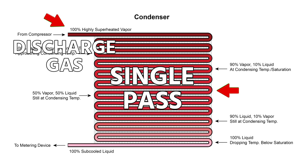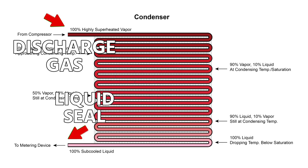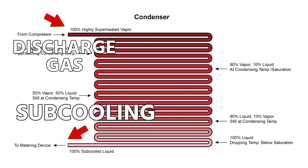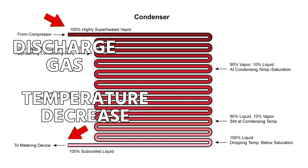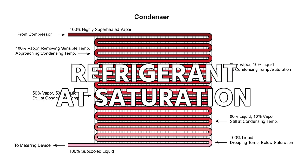In this image it shows a single pass. Condensers are generally multiple passes with headers, but it creates a liquid seal down at the bottom once it fully condenses. And that's where we see subcooling, because subcooling is the temperature decrease in refrigerant once it goes below that condensing temperature, or what we call our liquid saturation temperature.